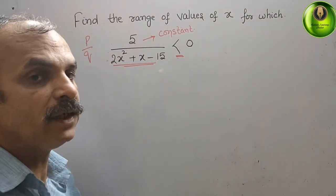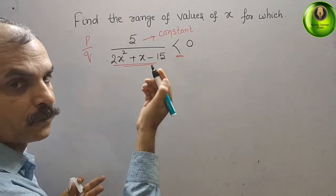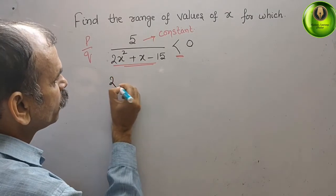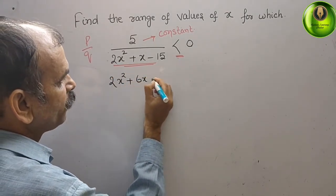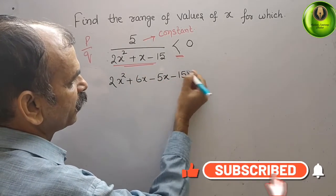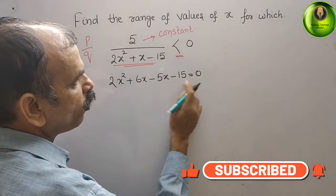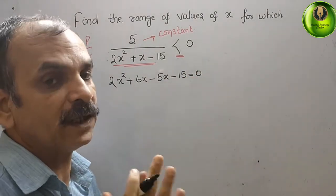6×5 is 30, 6 minus 5 is 1. So here you will get 2x² + 6x - 5x - 15, that is equal to 0. Go for equal to 0 first. We have to find out the value of x first.